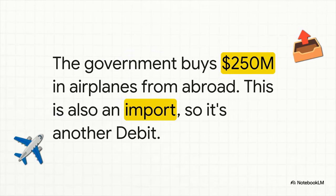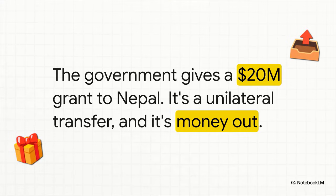Here's another one — a big one. The government buys airplanes from a foreign company for $250 million. Just like the machinery, these are goods being imported, so money is flowing out of the country to pay for them. That's another debit in the current account. Now for something a little different: our government gives a $20 million grant to Nepal. This isn't for a product or service — it's basically a gift, a one-way payment. The fancy term is a unilateral transfer. Is money leaving our country? Yes — so it's another debit in the current account.